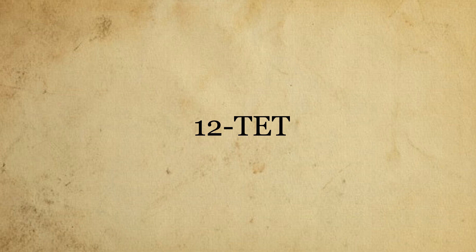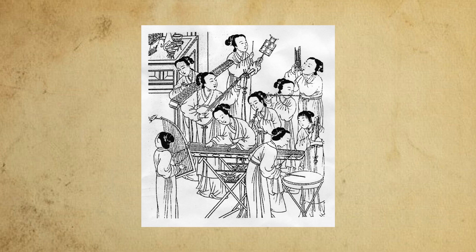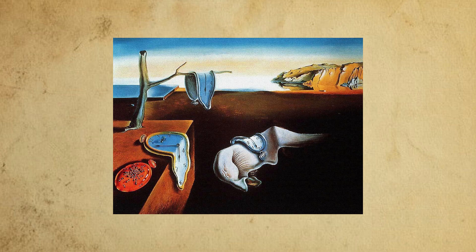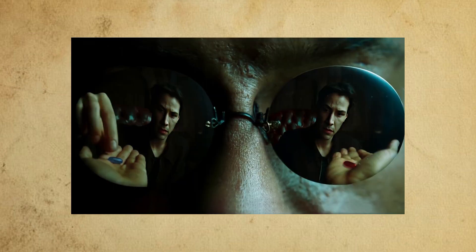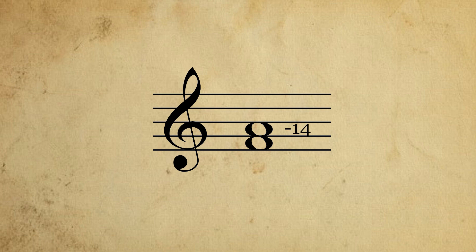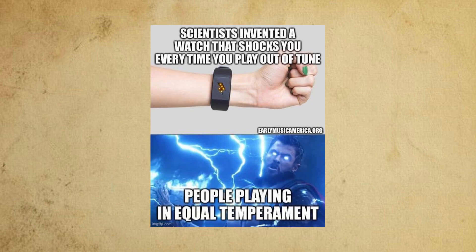12TET — it's everywhere. Musicians in China actually came up with it first, but somehow no one gives them credit for it. It's so omnipresent that it's difficult to notice its imperfections, kind of like the matrix. But once you took the blue pill and listened to a third tuned to the overtone series, it's difficult to ignore — at least for us.